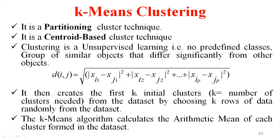How do you identify the initial number of clusters, k? The Elbow method is used to identify the k-value — that means, how many clusters you are selecting. The k-means algorithm calculates the arithmetic mean of each cluster formed in a dataset, which is why it is called the k-means algorithm.